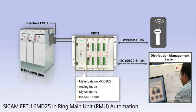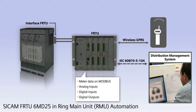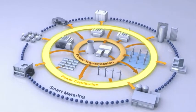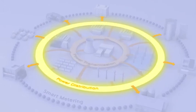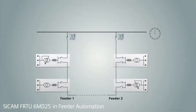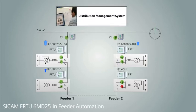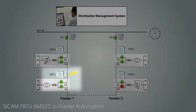The two feeders connected to the 6.6 kV bus act like a ring. The FRTUs communicate the fault status to the distribution management system when a fault occurs on feeder 1.